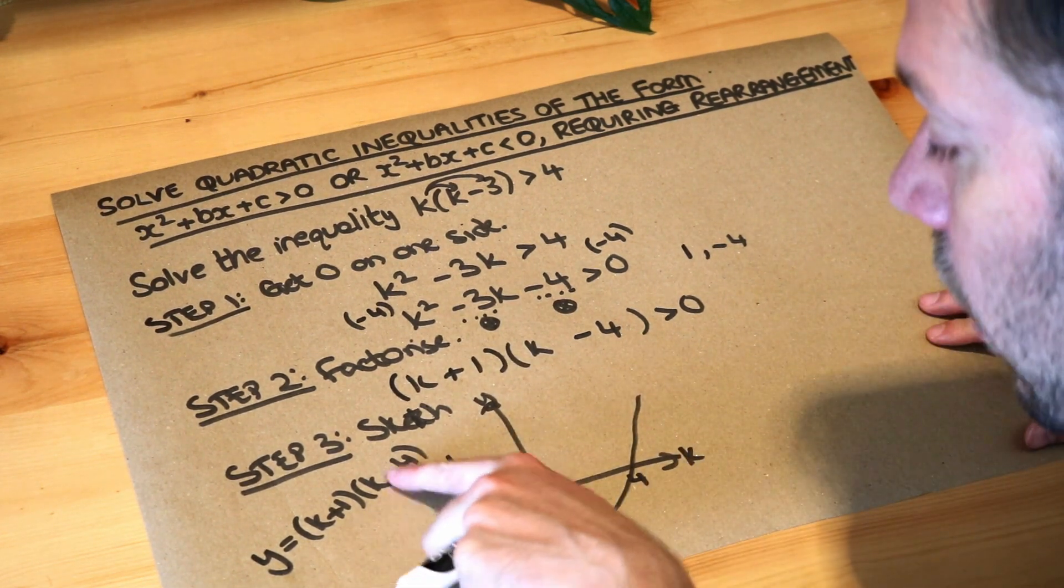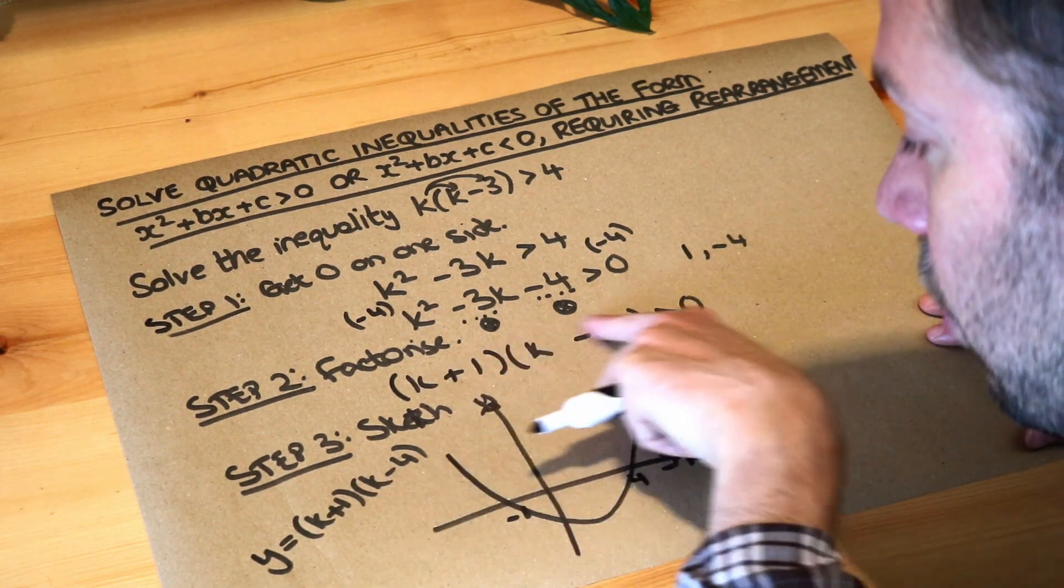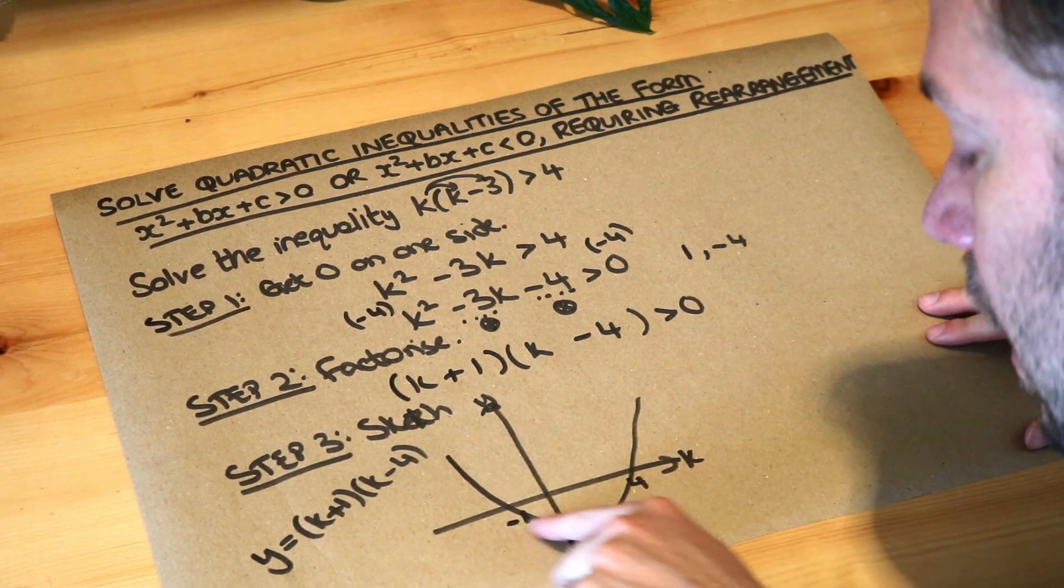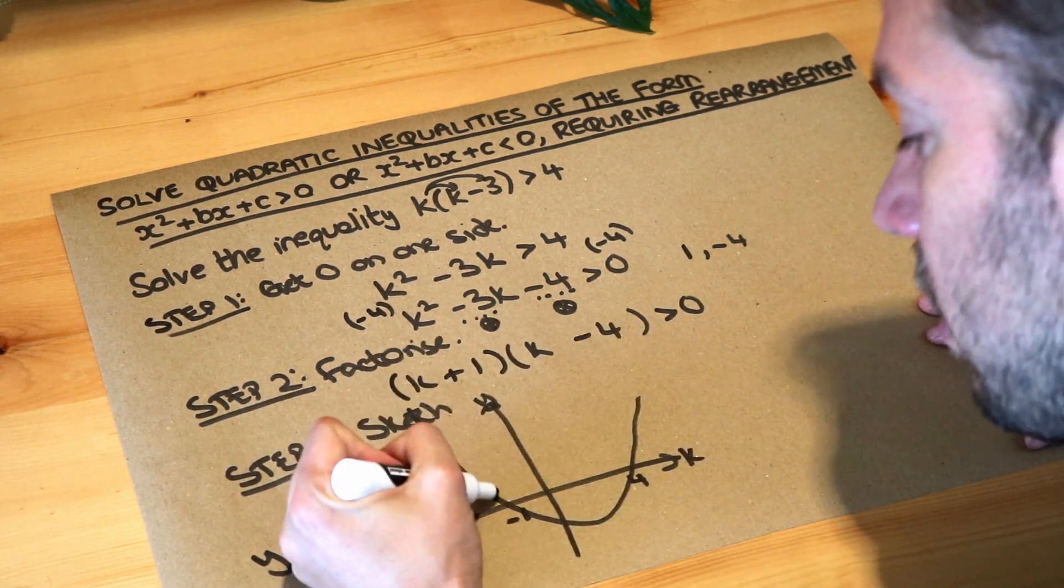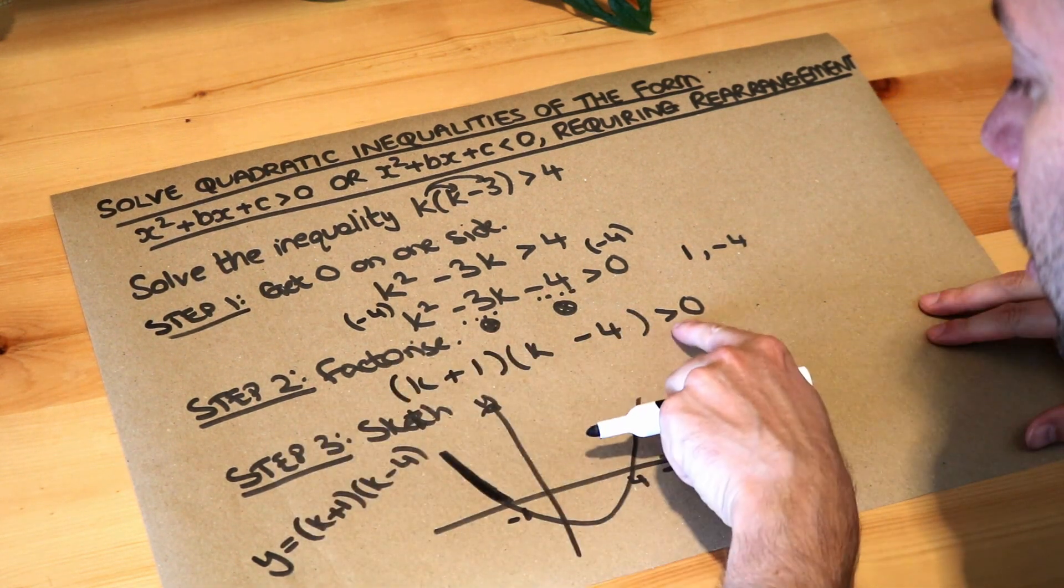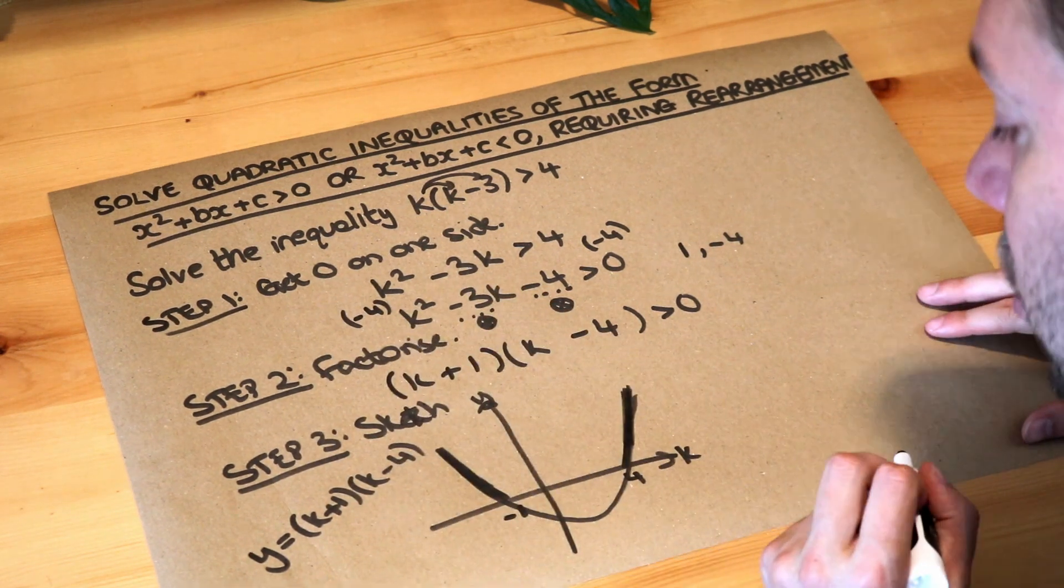Now we're wondering where y, which is this whole expression, is greater than zero. On the line, where is the y value greater than zero? Well it's these tails that the y value is going to be positive, greater than zero in any of this region here or in that region there.